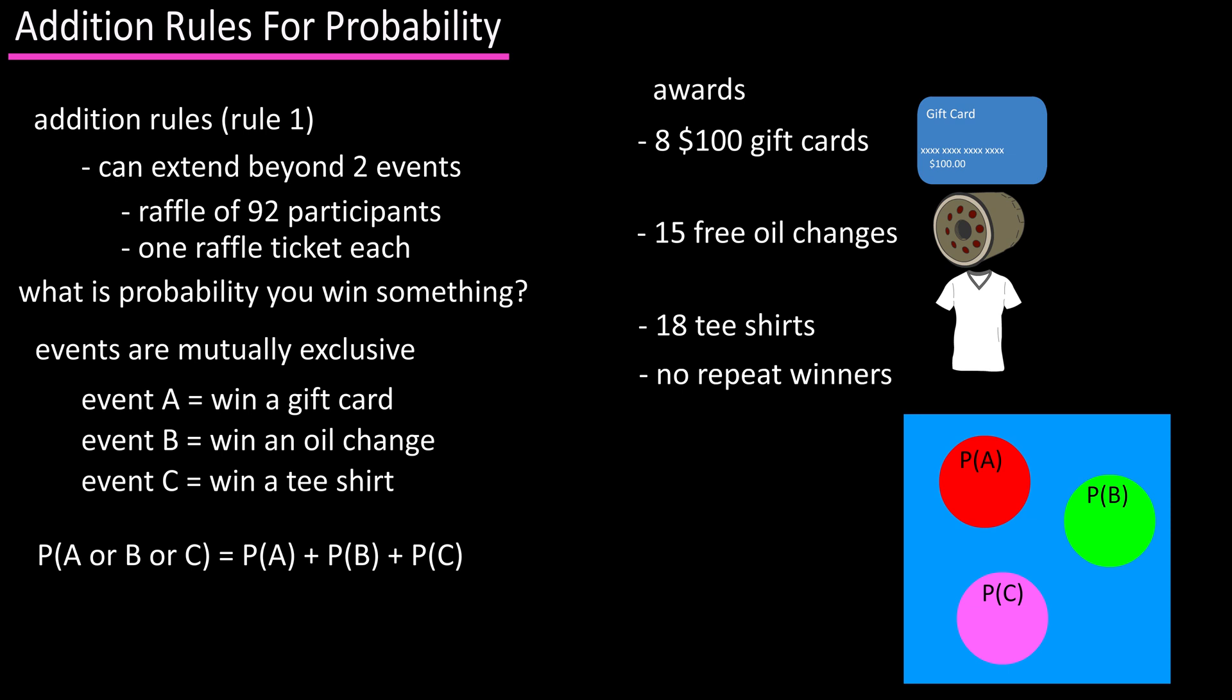With 92 participants, the probability of A equals 8 over 92, probability of B equals 15 over 92, and the probability of C equals 18 over 92. Add these up and we get 41 over 92, which equals 0.445, or a 44.5% probability of winning something.